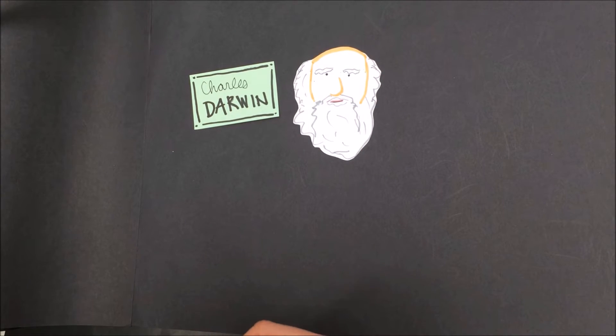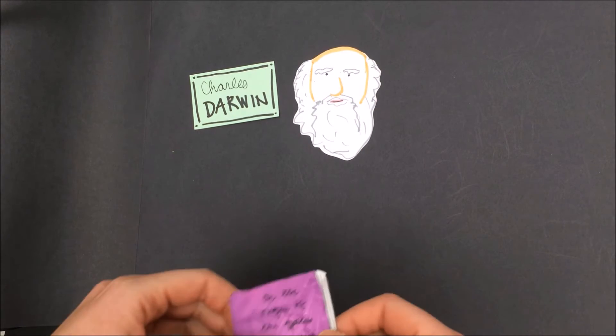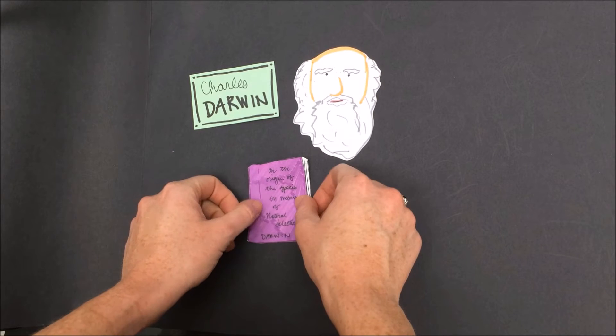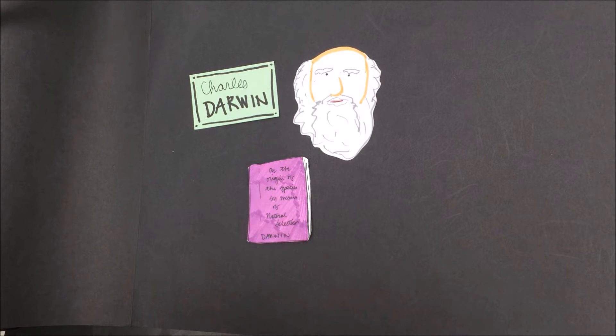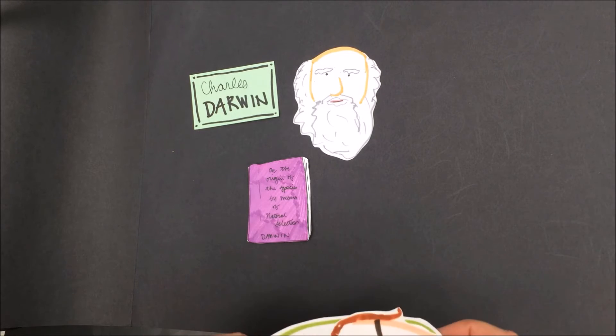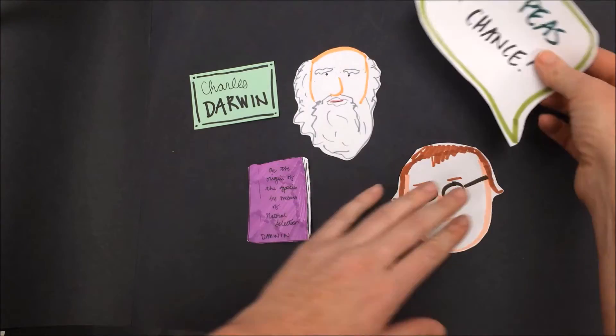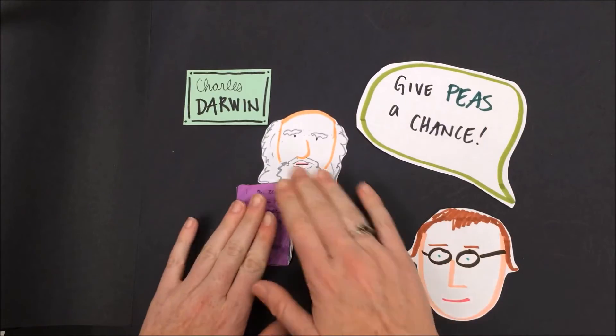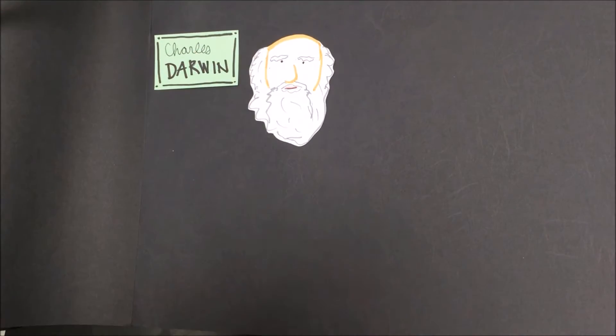In 1859, Darwin published all of these ideas in a book called On the Origin of the Species by Means of Natural Selection. You may hear it referred to as The Origin of the Species. It's the same book, it's just got a really long title. To give you a frame of reference, this book was published at the same time that Mendel was pollinating different peas in his garden.